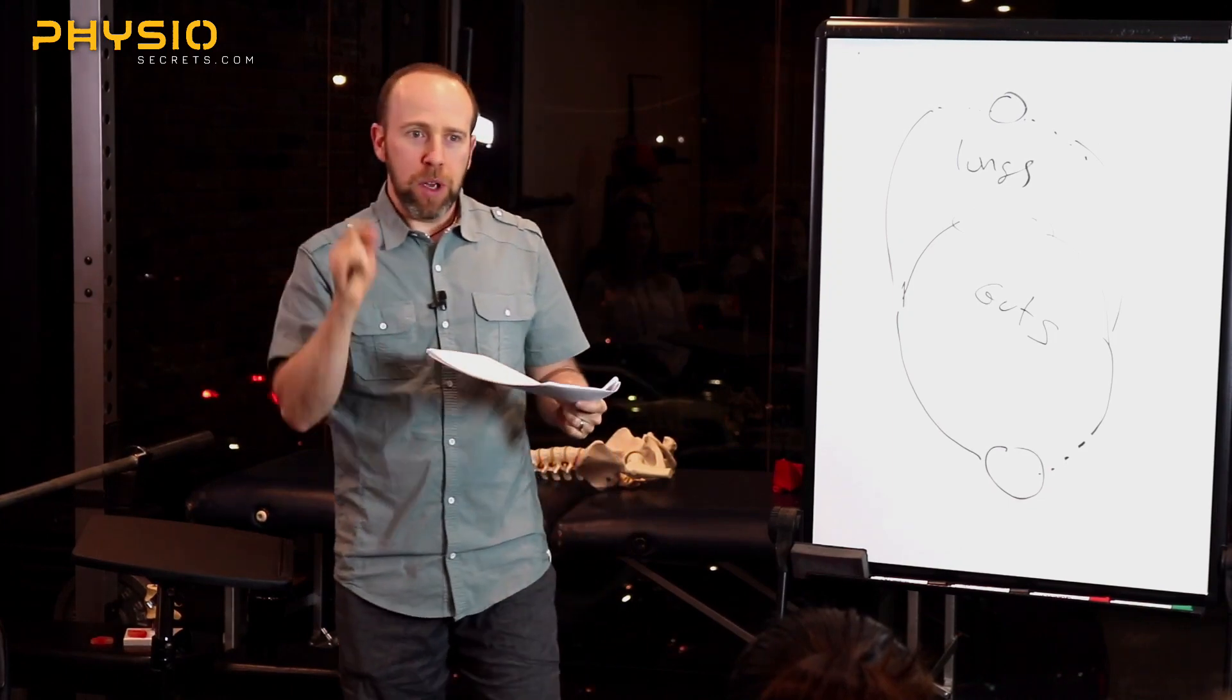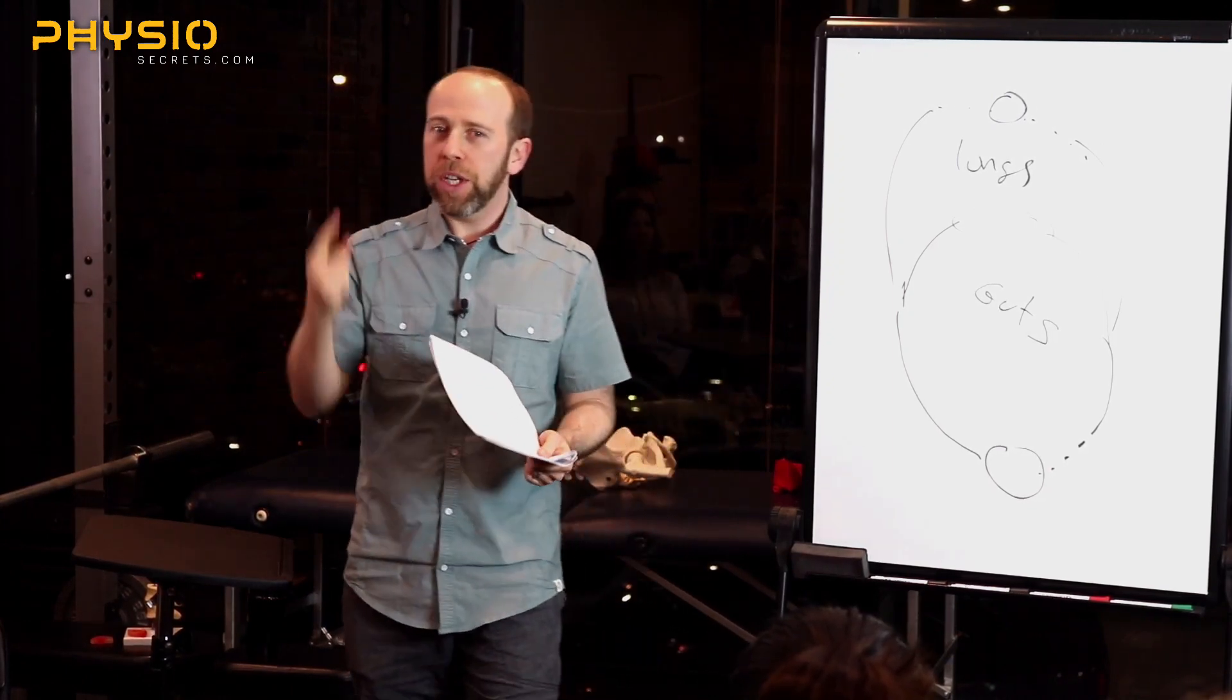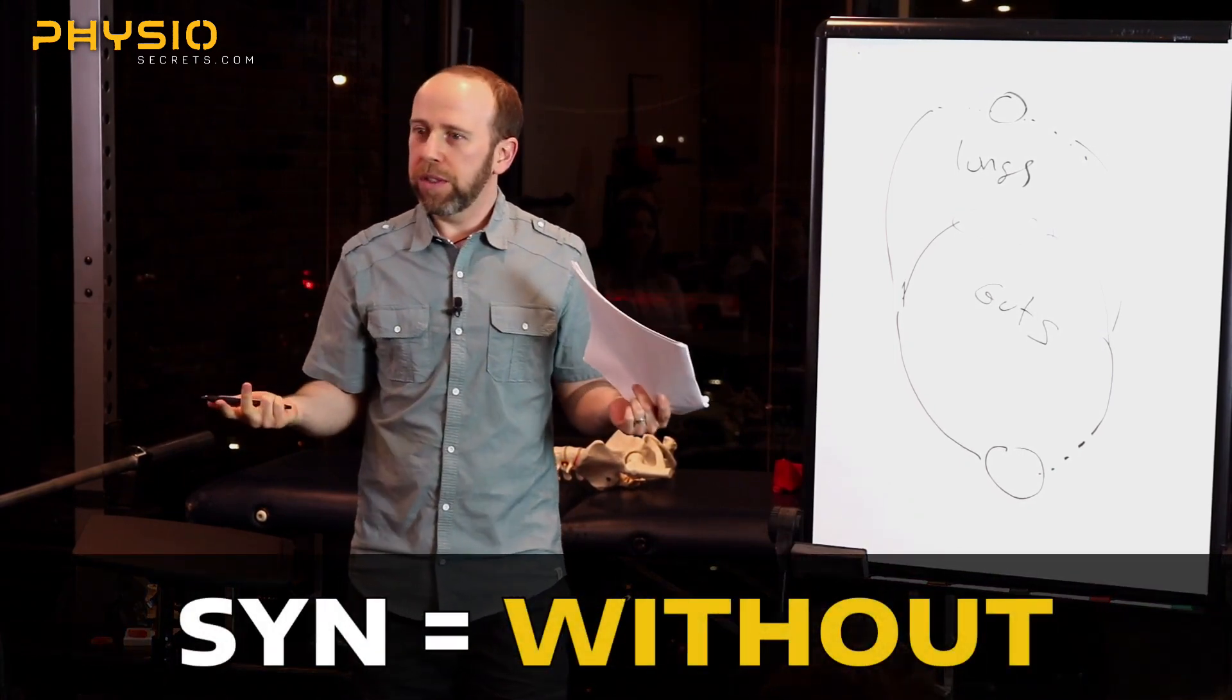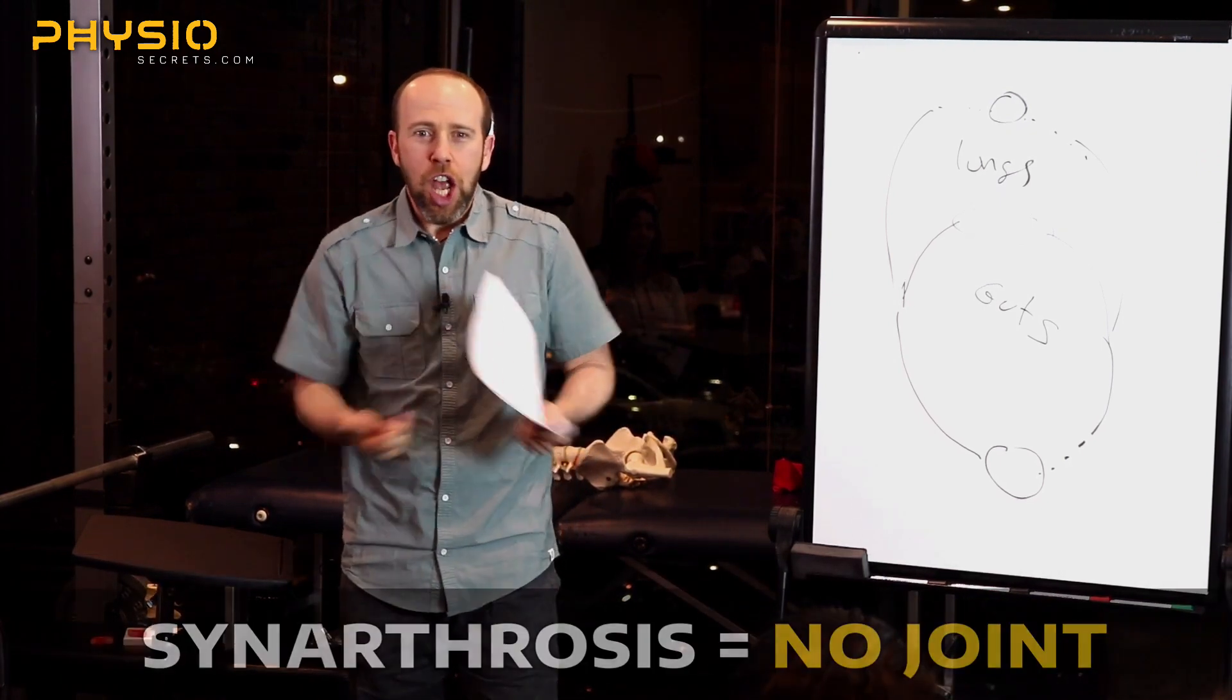If you research the first rib, one of two things will happen. The first thing is you will read that it is a synarthrosis. What does the word syn mean? Without. What's arthrosis? Joint. So what's a synarthrosis? There's no joint.